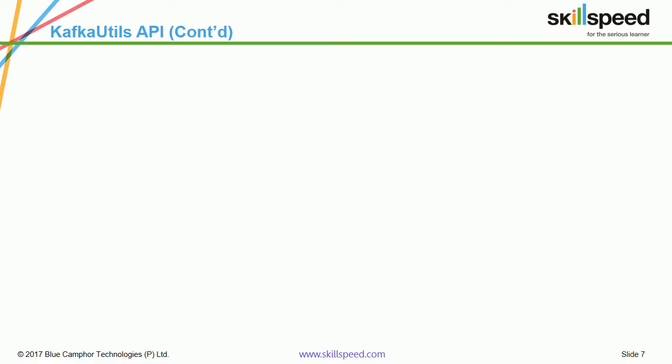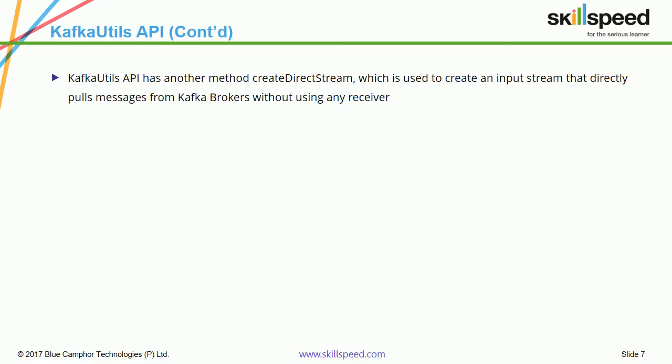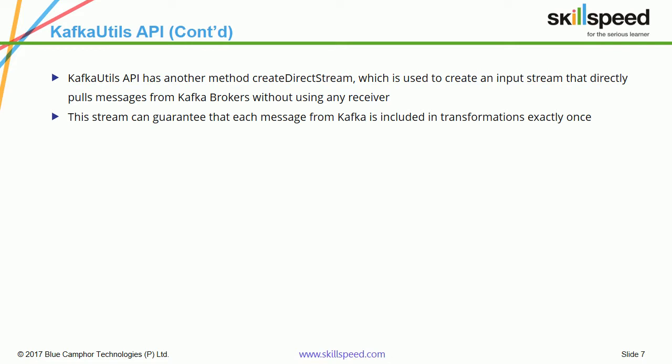Let's have a look at how to create the Kafka Utilities API and how to use it in Spark Streaming. When using the Kafka Utilities API, it uses a method called createDirectStream. This will create a DStream but it will not employ a receiver. In previous examples we were creating a receiver and pulling the data, but when you use the Kafka Utilities API, this will create an input stream that can directly pull data from a Kafka broker without the help of a receiver.